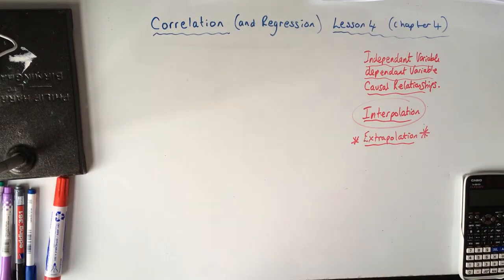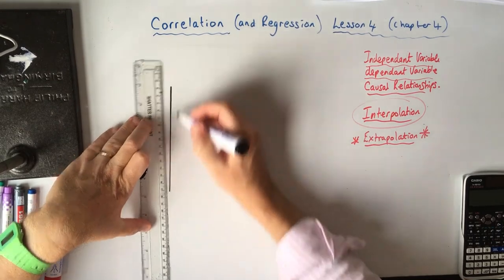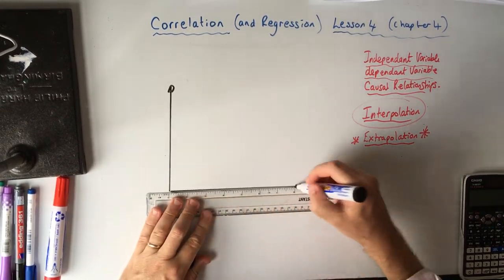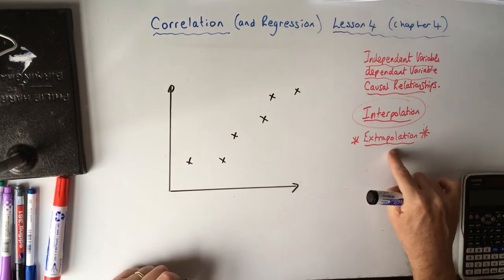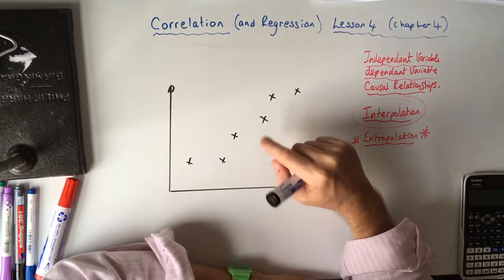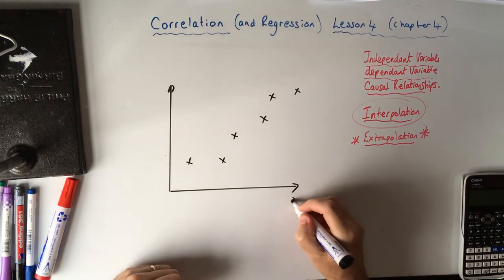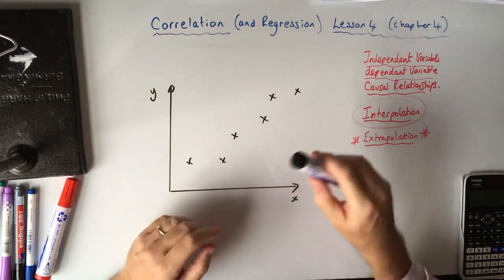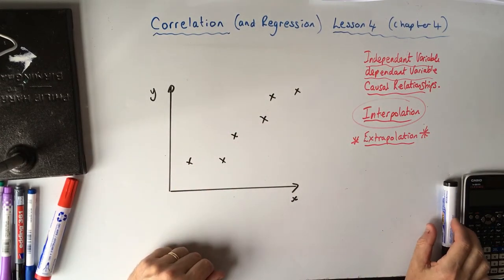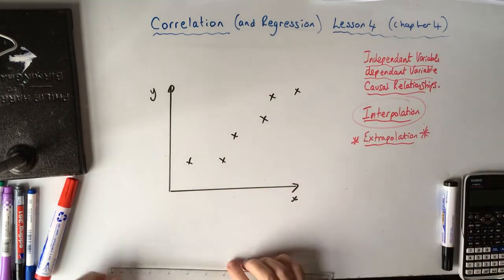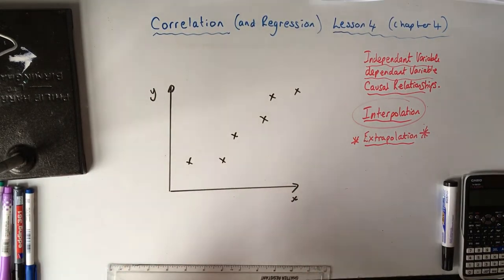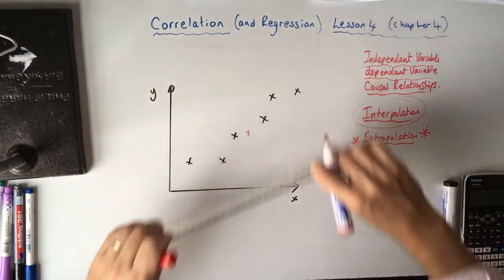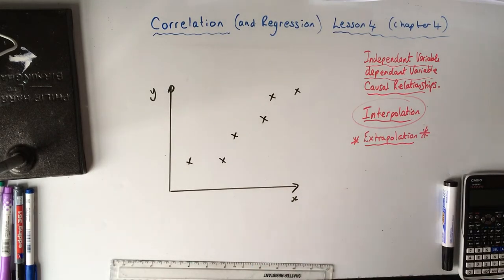Regression is just adding a lot more accuracy to your line of best fit. If we're going to use interpolation or extrapolation to make predictions from data, we want those predictions to be as accurate as possible, and that means a really good line of best fit. At GCSE you just stick your ruler on. One improvement is to find the mean of the X values and mean of the Y values, plot those as a point and pivot your line around it. But at A-level there's something called a regression line.